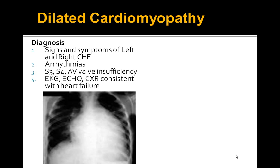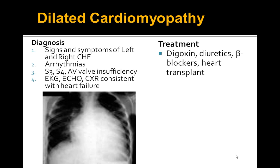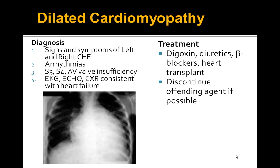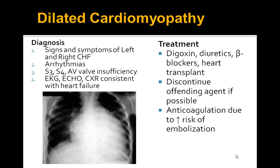On the chest X-ray, you'll see consistent signs of heart failure — the heart is enlarged. Treatment involves diuretics, digoxin, beta blockers, and possible heart transplantation. You want to discontinue the offending agent, whether it's medications or alcohol, address the main cause, and anticoagulate patients to prevent risk of embolization.